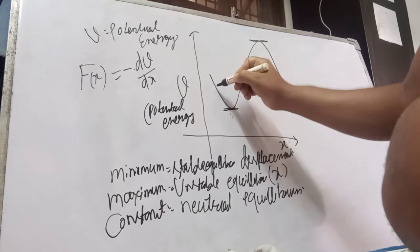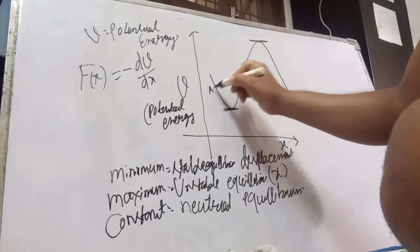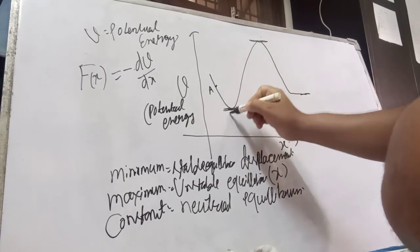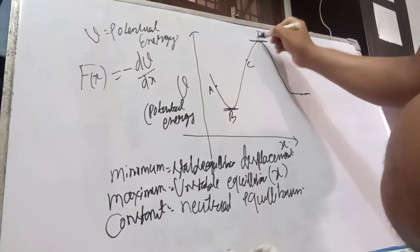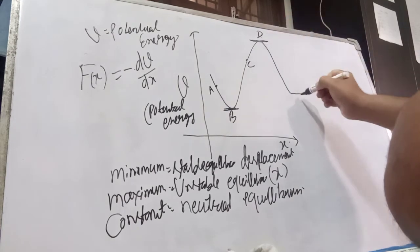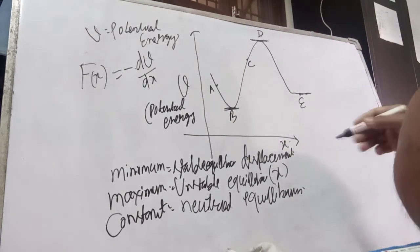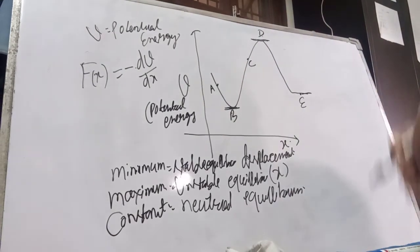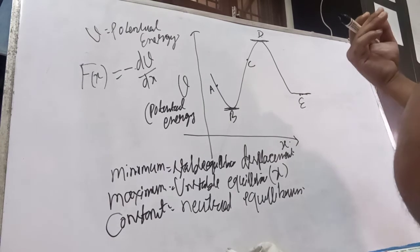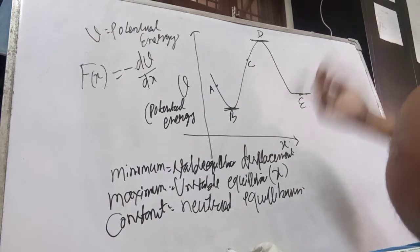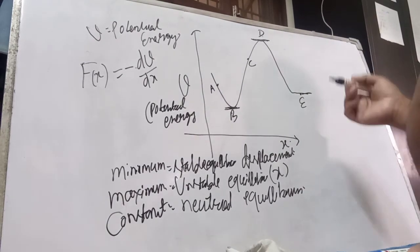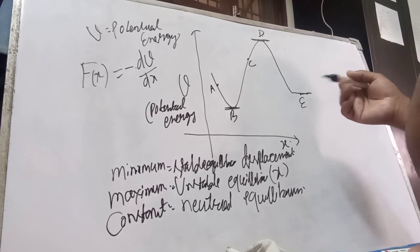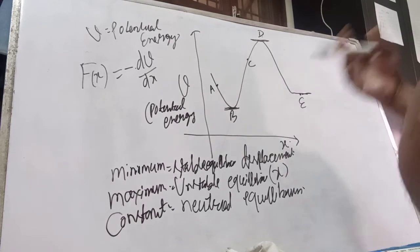Suppose there is a point A here, this is point B, this is C, this is D, and this is E. We will deduce for various points how the force changes and which point has stable equilibrium.